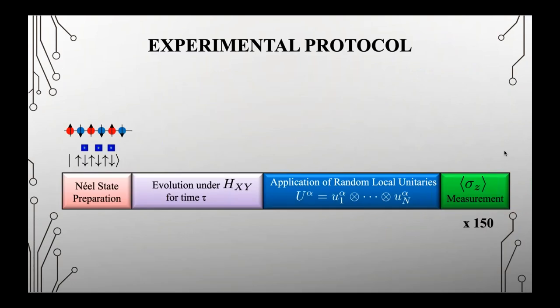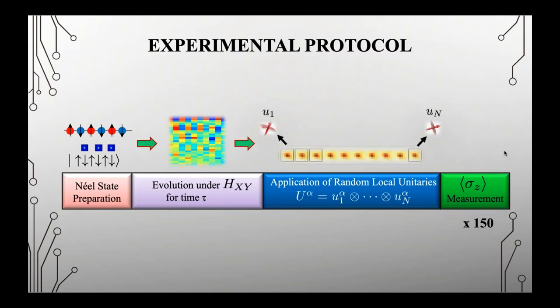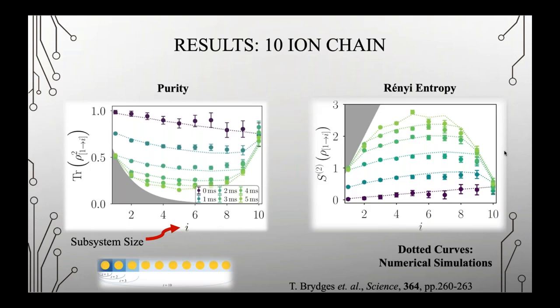To practically implement this in the experiment, we prepared the Néel state — alternating up-down-up-down — and evolved it under our Hamiltonian for different time steps τ. We then applied these random local unitaries to each ion and made a σ_z measurement (asking if it's bright or dark). We repeated this 500 times, each time completely randomizing the local unitaries we applied.